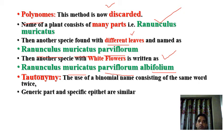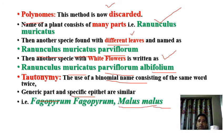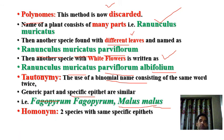Next is tautonymy. This is the use of a binomial name in which both parts — the generic name and the specific epithet — are similar. For example, Pyrus malus: 'malus' means apple. It was later written as Malus malus. This was a method of writing where the second name repeats the genus name.